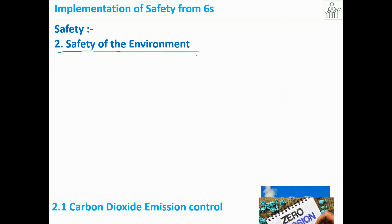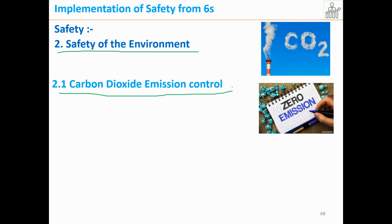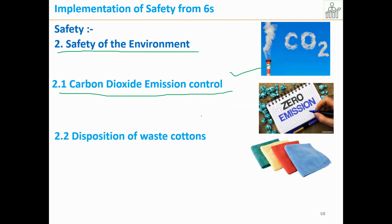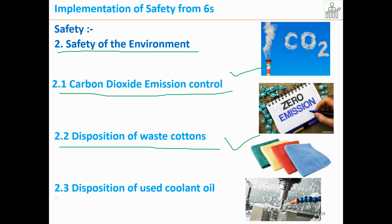For the safety of the environment, we need to control CO2 emissions. There may be special processes where CO2 is emitted, so what system or method does your company have to do it safely without harming the environment? Also important is the disposition of waste cotton — used cottons in the company — and the disposition of used coolant oil. Once coolant oil becomes unusable and needs to be scrapped, how will you dispose of it without affecting the environment?